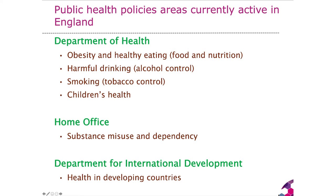The Department of Health also focuses on health in developing countries — how health in developing countries can have an impact back home in the UK, and how we can work with other countries to improve health and wellbeing globally. The Department of Environment, Food and Rural Affairs works with the Department of Health on air pollution strategies. The Department of Transport works with the Department of Health on improving road safety and increasing physical activity and active travel. And the Department of Health works with the Department of Education on improving children's health, wellbeing and performance in schools.